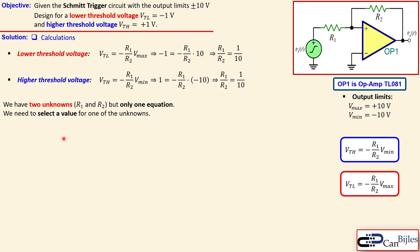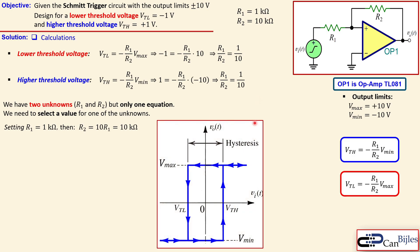Now we have our values: R1 equal to 1 kΩ and R2 equal to 10 kΩ. These yield the correct input versus output characteristics, with a minimum output of minus 10 V, a maximum output of plus 10 V, an upper threshold V_TH of plus 1 V, and a lower threshold V_TL of minus 1 V. Let's now look at the simulation results.